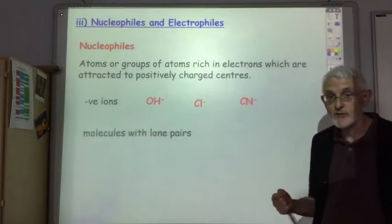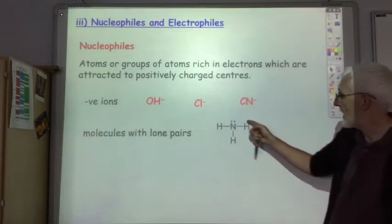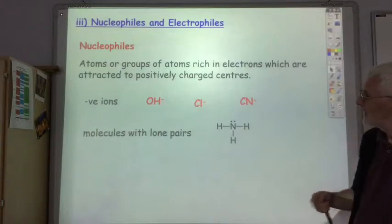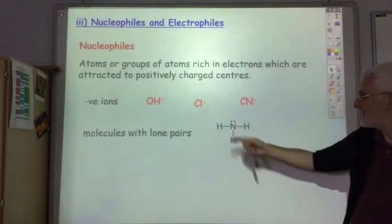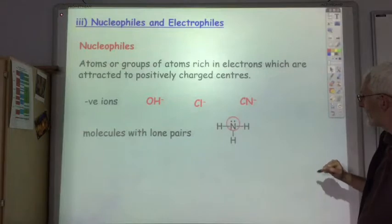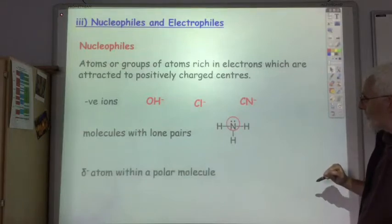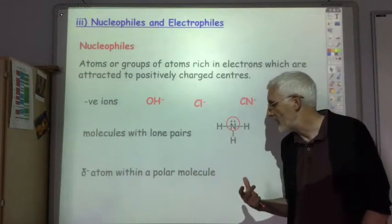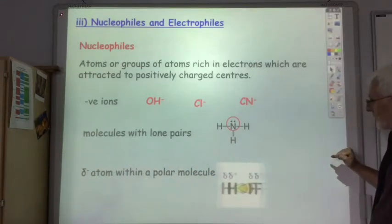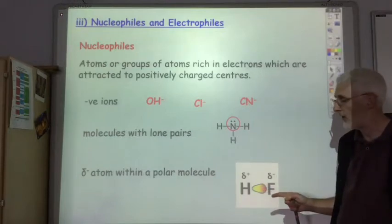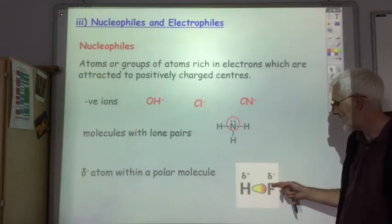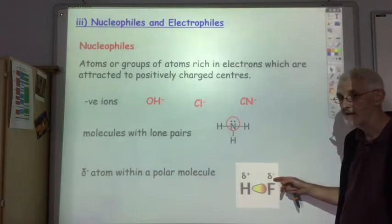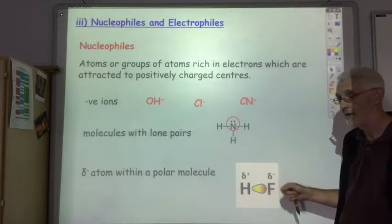Also molecules with lone pairs like the ammonia, the non-bonding lone pair on the nitrogen is attracted towards a positive center so this is a good nucleophile. Or even the more electronegative part of a polar molecule, for example HF is a very polar molecule. F's got far higher electronegativity than H so that negative end, slightly negative end of the molecule can act as a nucleophile.